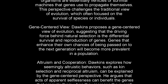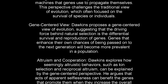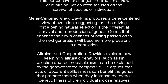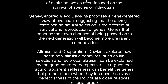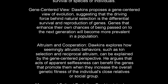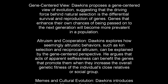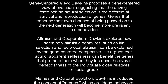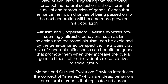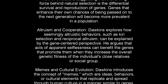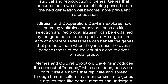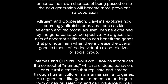Altruism and Cooperation: Dawkins explores how seemingly altruistic behaviors, such as kin selection and reciprocal altruism, can be explained by the gene-centered perspective. He argues that acts of apparent selflessness can benefit the genes that promote them when they increase the overall genetic fitness of the individual's close relatives or social group.